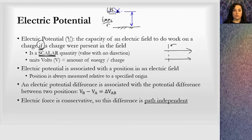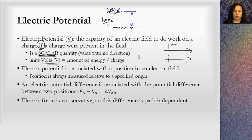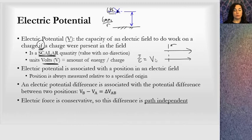The symbol for electric potential is V, and that's because its units come from volts — that's the units of electric potential. It's the amount of energy required to move a charge, so that is joules per coulomb. Those are the SI units of electric potential, simplified down to volts. So moving forward, we will give electric potential in terms of voltage.